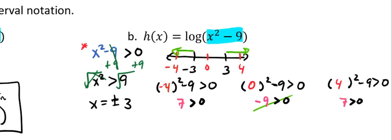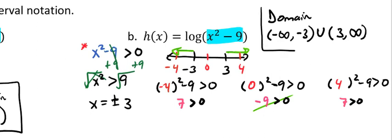So for our domain, for this problem, we're going to have from negative infinity to the number negative 3. And that's not included because we don't have a greater than or equal to sign there. And we're going to union that with positive 3 to infinity. And now we have our domain of this logarithmic function.